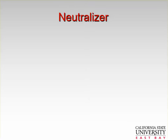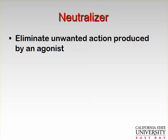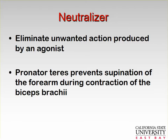You can also have something called a neutralizer. The neutralizer eliminates unwanted action produced by an agonist. For example, your pronator teres prevents supination of the forearm during contraction of the biceps brachii. The functions of your biceps brachii are glenohumeral flexion, elbow flexion, and supination. So if you don't want supination when you engage your biceps, you also engage your pronator teres — and you'll only get elbow flexion and/or glenohumeral flexion.